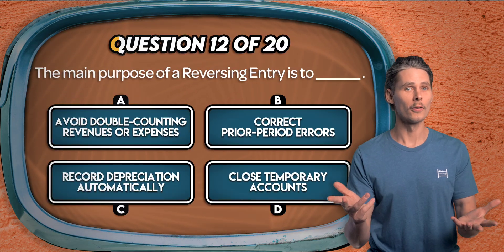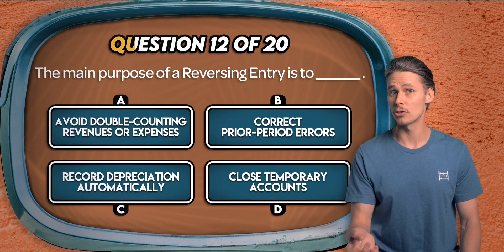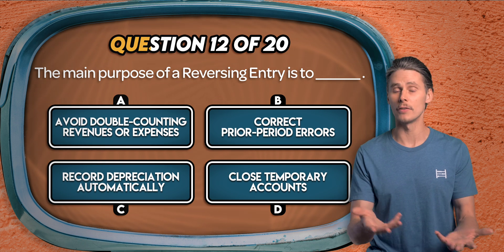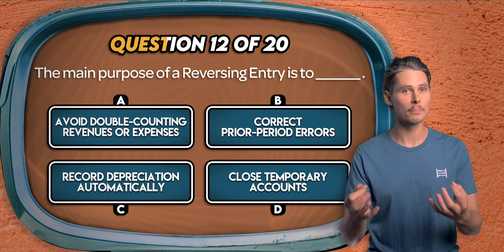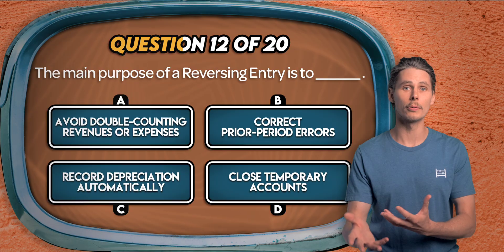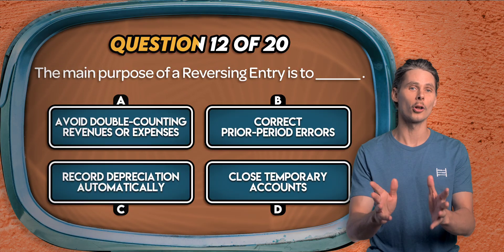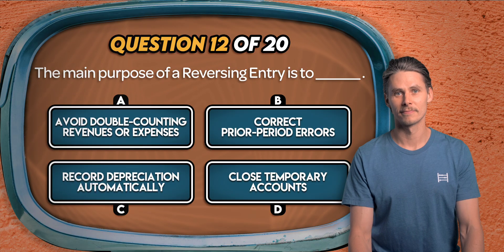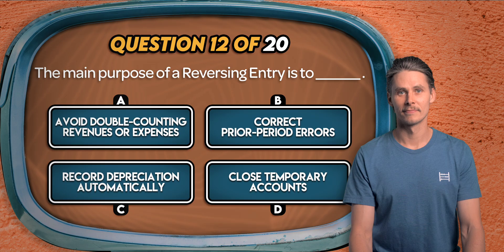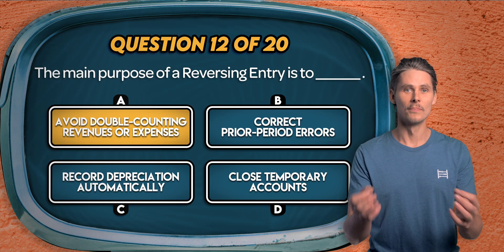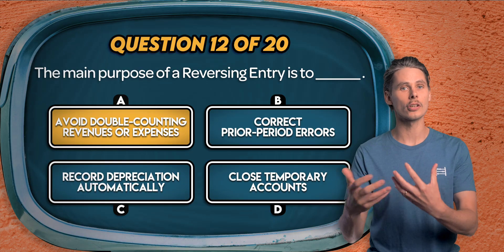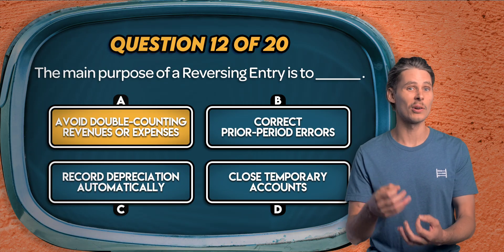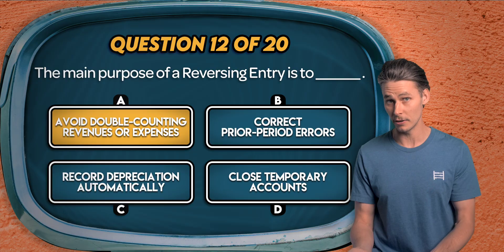Question 12. The main purpose of a reversing entry is: to avoid double-counting revenues or expenses, to correct prior period errors, to record depreciation automatically, or to close temporary accounts? Reversing entries are made at the start of a new accounting period to cancel out adjusting entries from the previous period.